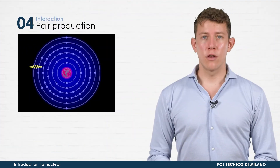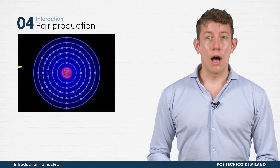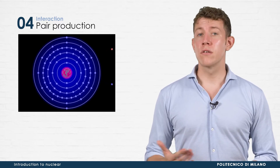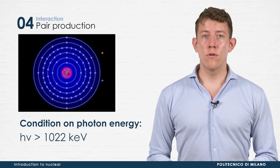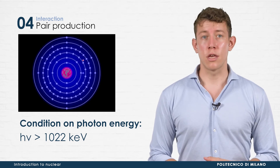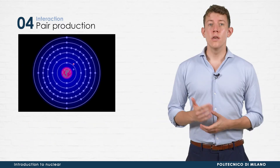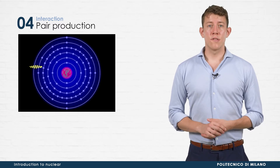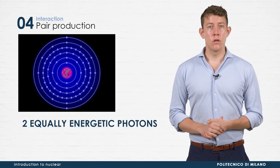A peculiar way in which photons interact with matter is pair production. During the interaction with an atomic nucleus, a photon can transform itself into an electron-positron pair. In this process, its energy is converted to the rest mass of the particles, following Einstein's equation E equals mc squared. For such reason, only photons with energy greater than the rest energy of the electron-positron pair undergo this process. The excess energy becomes kinetic energy for the two particles. Given its antiparticle nature, the positron will annihilate with an electron, causing the emission of two equally energetic photons which, due to energy and momentum conservation, travel in opposite directions.